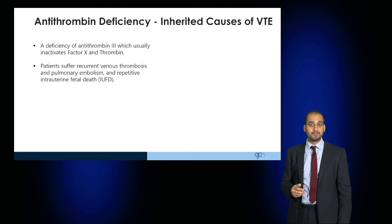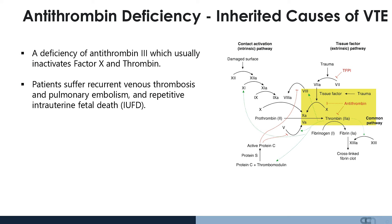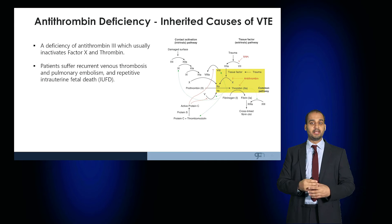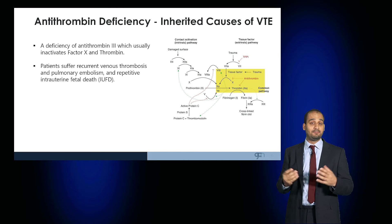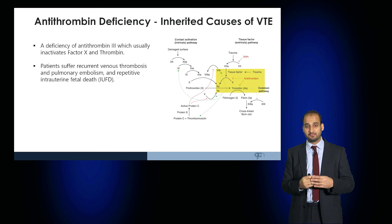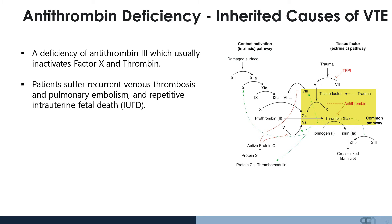Antithrombin deficiency: antithrombin usually inactivates factor X and thrombin. If antithrombin is deficient, that can result in the generation of fibrin and crosslinked fibrin clots, resulting in pulmonary embolism, and in females can result in repetitive intrauterine fetal death. Antithrombin deficiency can also occur as a result of nephrotic syndrome, as this protein can be leaked into the urine.